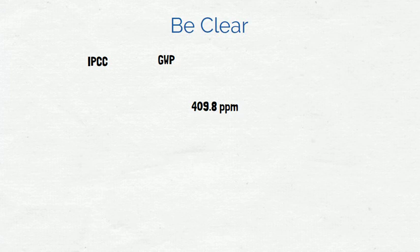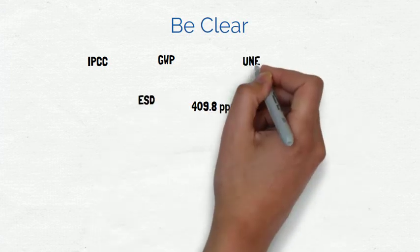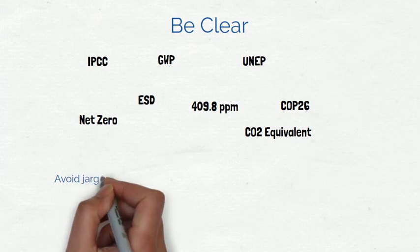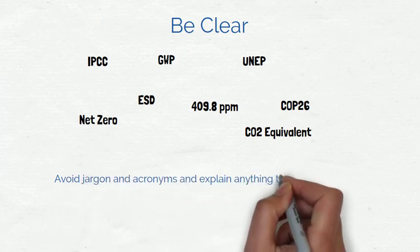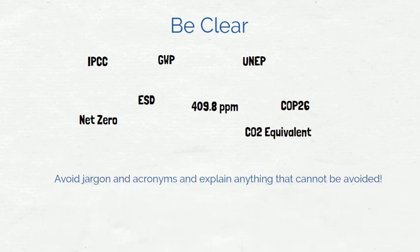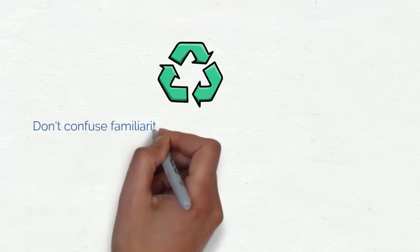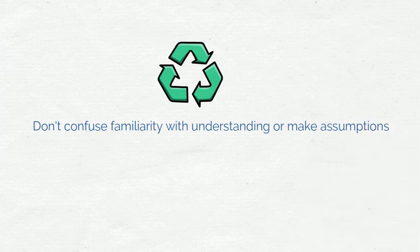Step one is be clear. There are many confusing terms and acronyms in climate change. Where possible, you should avoid them entirely, or where you cannot avoid them, explain them fully. Also, just because something is well known doesn't mean it's well understood. For example, many people will recognise this recycling logo, but will be unsure what it means.